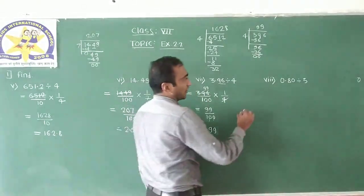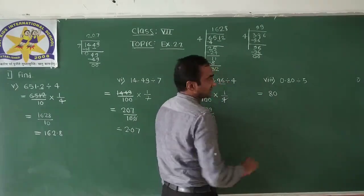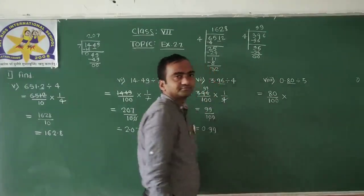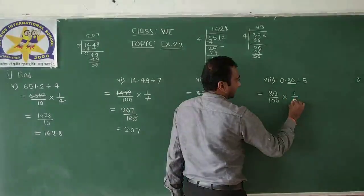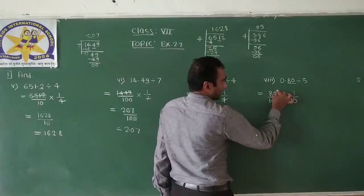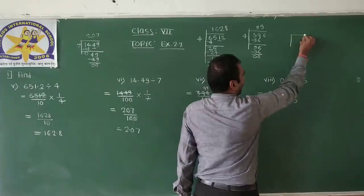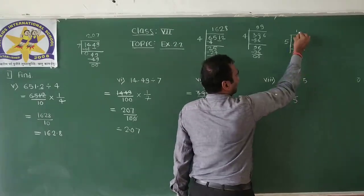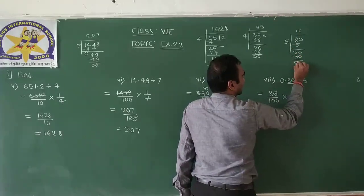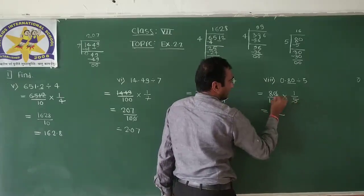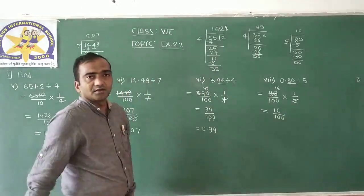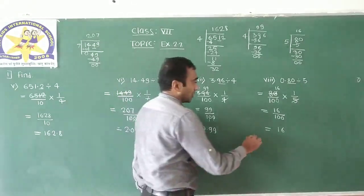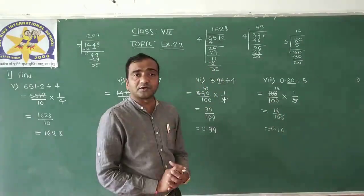The last question: 0.80 can be written as 80 divided by 100, since after 2 digits there is a decimal point. Convert division into multiplication. The reciprocal of 5 is 1 by 5. Now divide 80 by 5: 5 into 8 is 1, remainder 3. Take 0, making 30. 5 into 30 is 6. So in the numerator you get 16, and the denominator is 100. There are 2 zeros in the denominator, so after 2 digits you place the decimal point. The answer is 0.16.